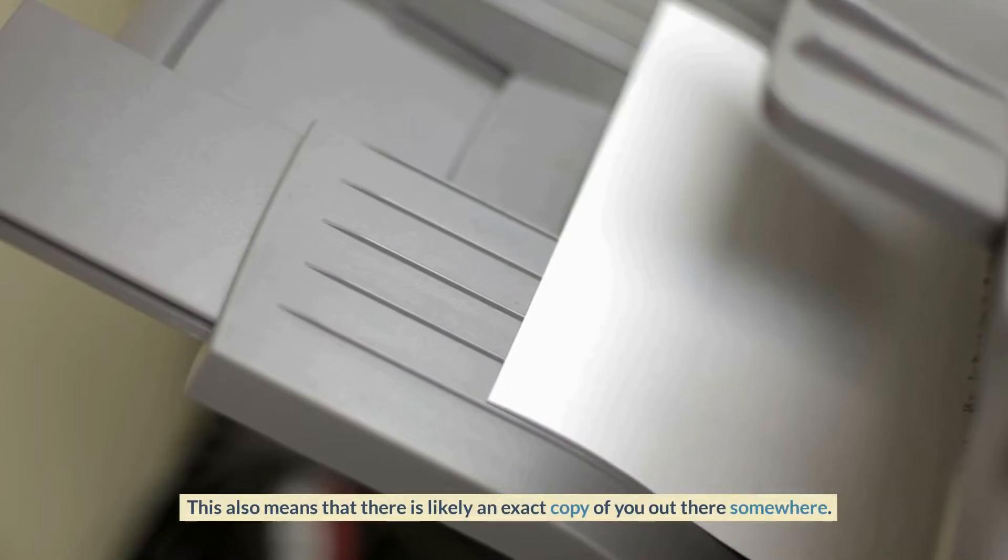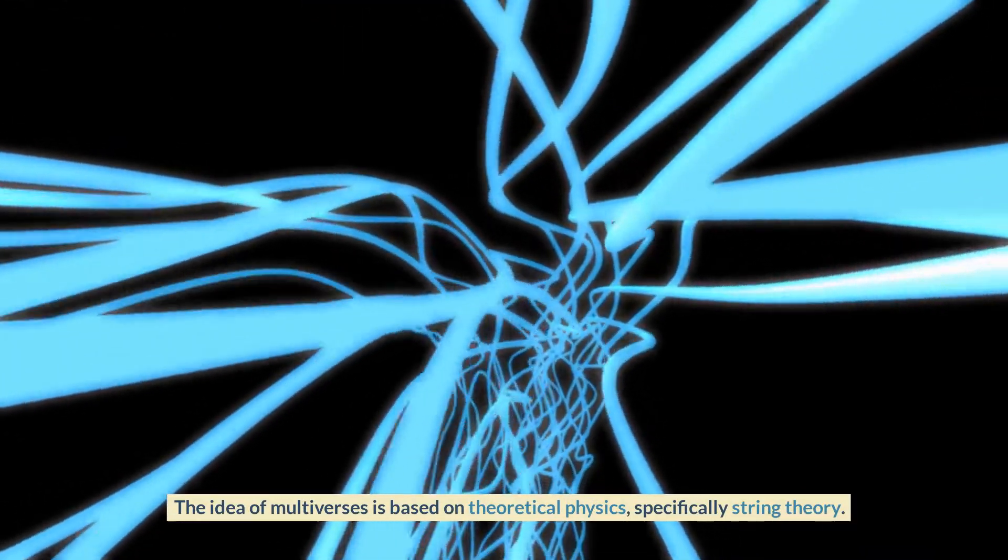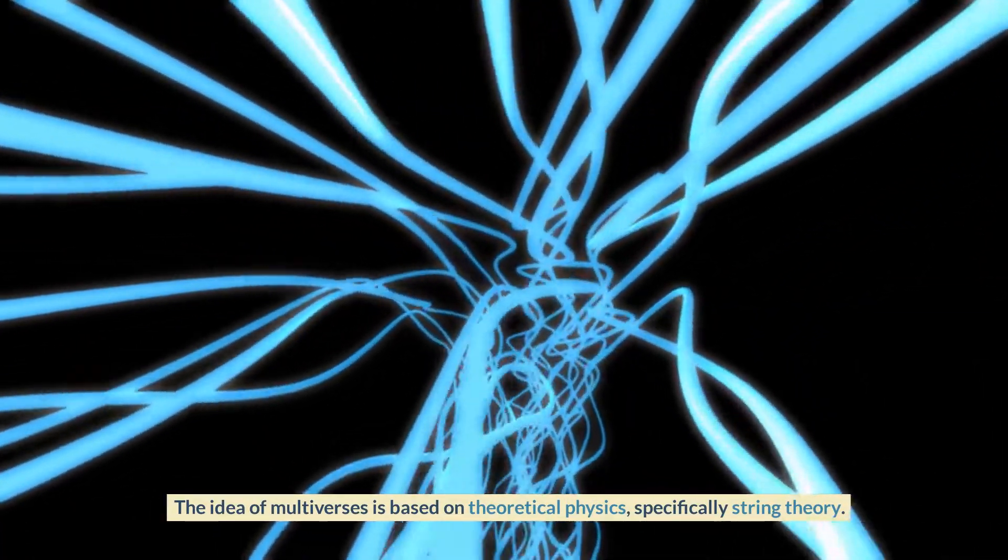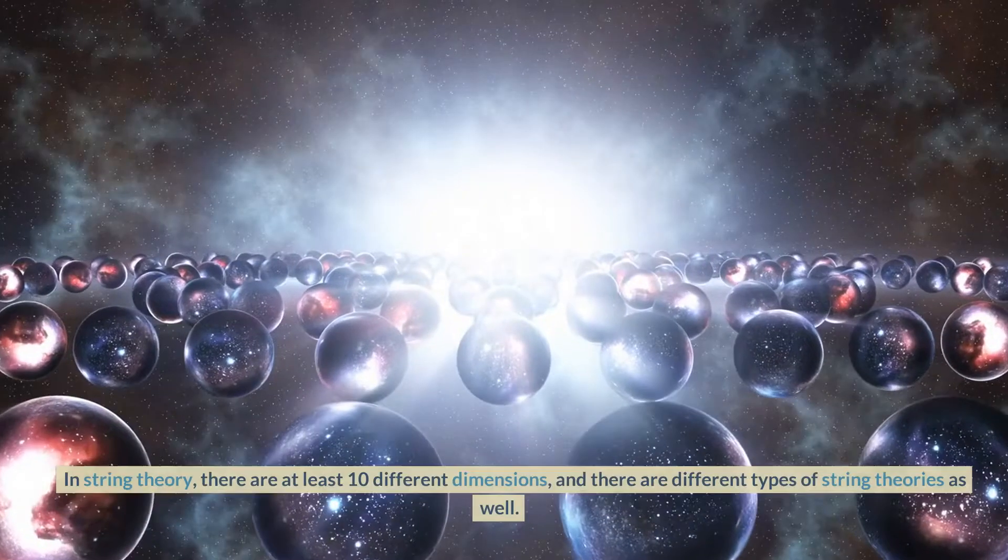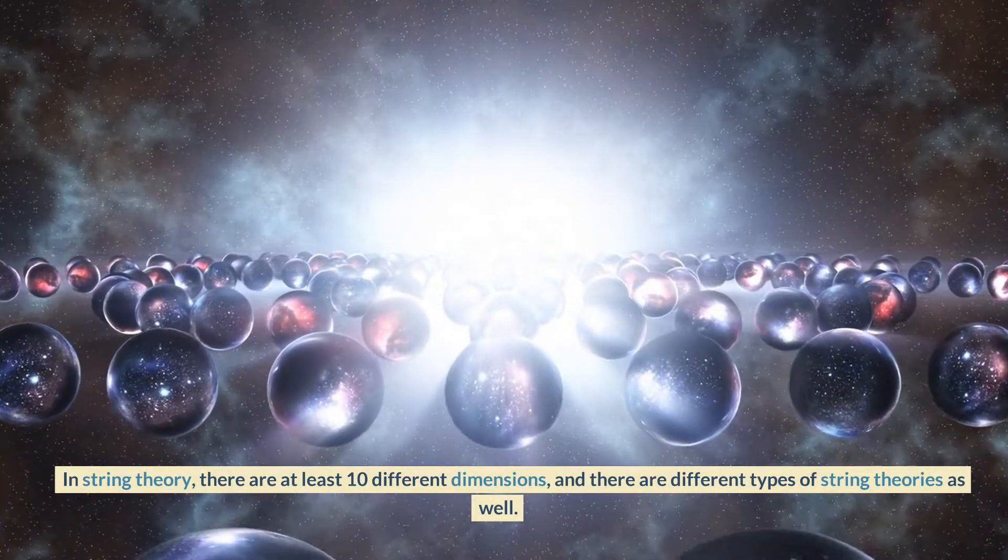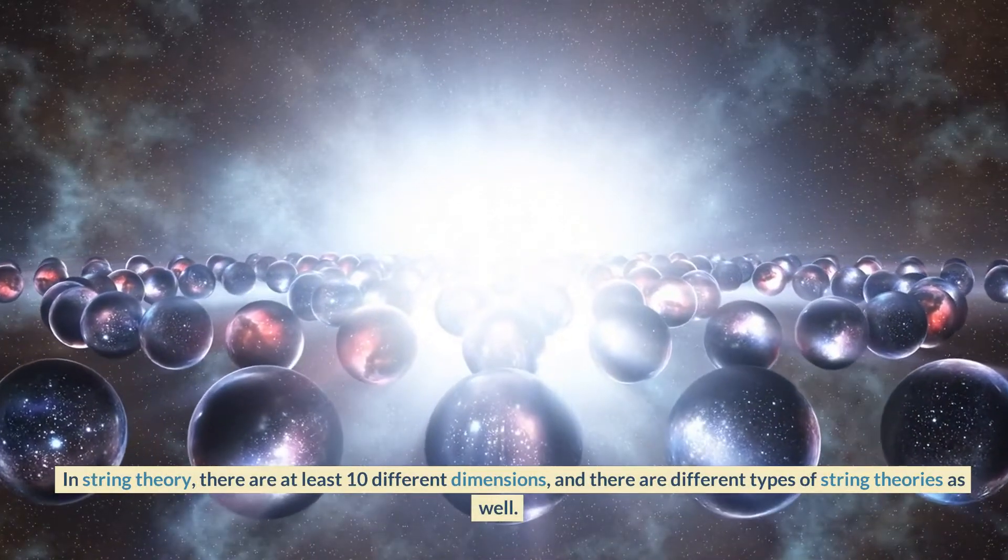This also means that there is likely an exact copy of you out there somewhere. The idea of multiverses is based on theoretical physics, specifically string theory. In string theory, there are at least 10 different dimensions, and there are different types of string theories as well.